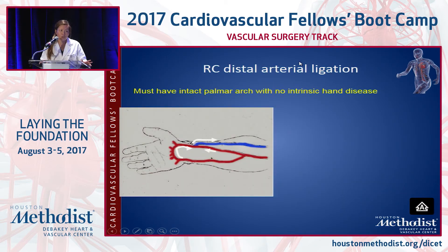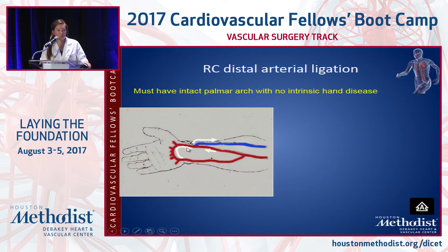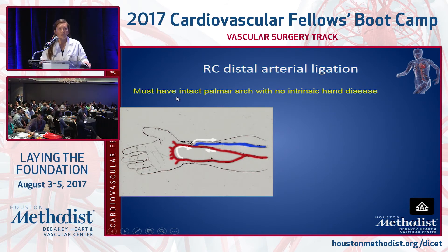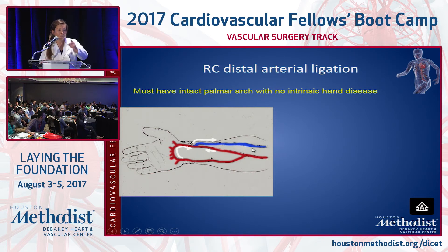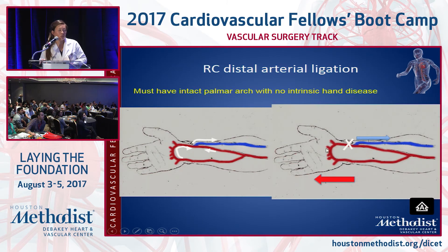If it's a radiocephalic fistula, you can ligate the radial artery — this is actually an oral board question. What would you do if you had steel in a radiocephalic AV fistula? But before you ligate the distal radial artery, what do you have to do? Make sure you have an intact palmar arch before you ligate.